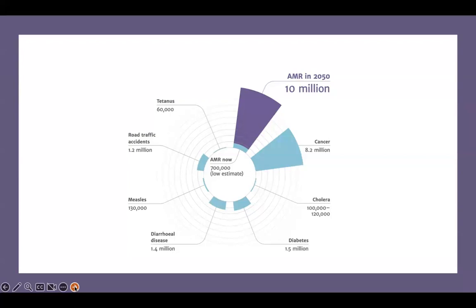Currently there is an estimate of about 700,000 people dying annually from antimicrobial resistance — a low estimate. Compared to road accidents causing about 1.2 million deaths, by 2050 cancer will be surpassed by antimicrobial resistance. This is a silent pandemic which is happening under our noses. If we don't take action now, it is going to be a global problem, with about 10 million people dying annually because of antimicrobial resistance.